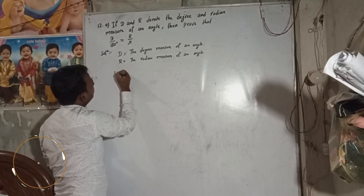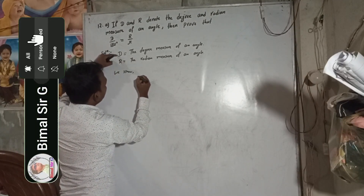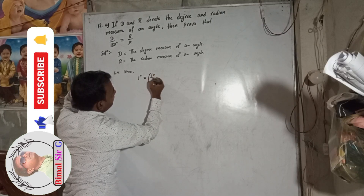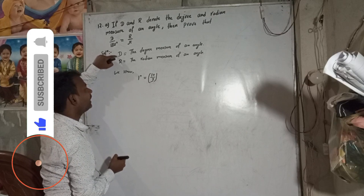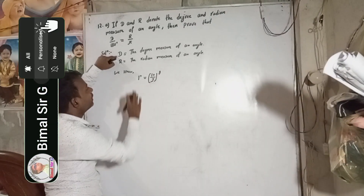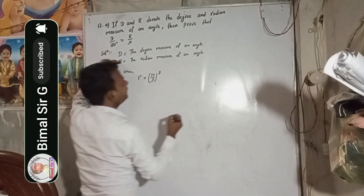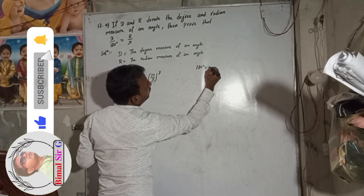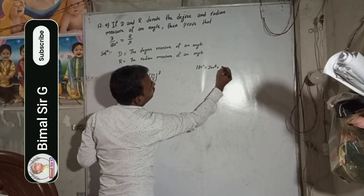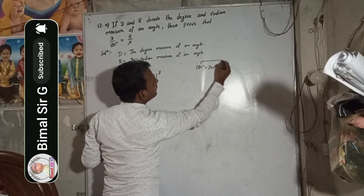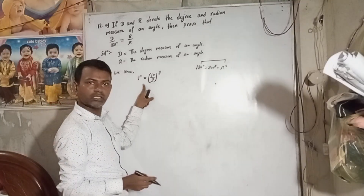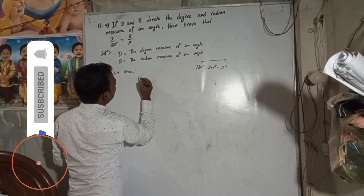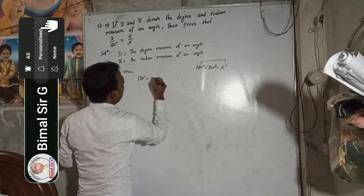So we can write now — we know one degree is equal to 10 by 9 — that is the grade case, we don't need this. We need the radian case. Remember this formula: 180 degree is equal to 200 grad is equal to pi radian. So we have to take this relation: 180 degree is equal to pi radian.